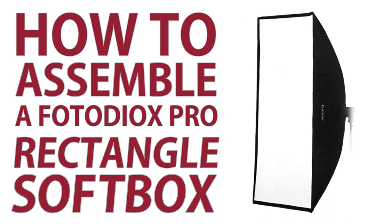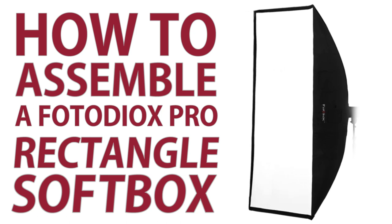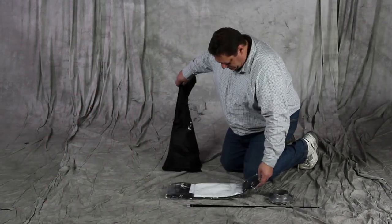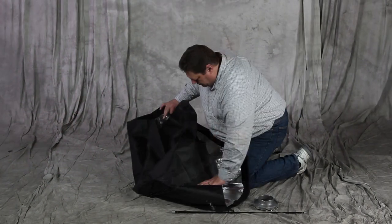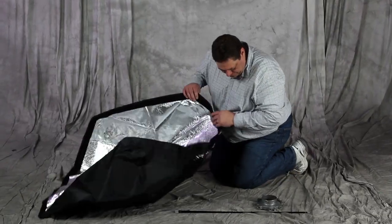Here's how to assemble your PhotoDiox Pro rectangle softbox. First, remove the contents from the carrying bag. Start by unfolding the softbox, spreading it out on the ground with its reflective interior side facing up.